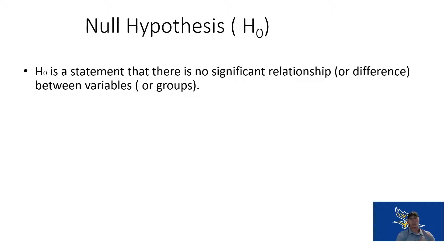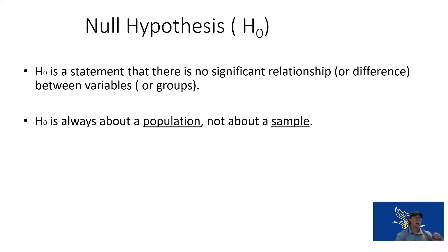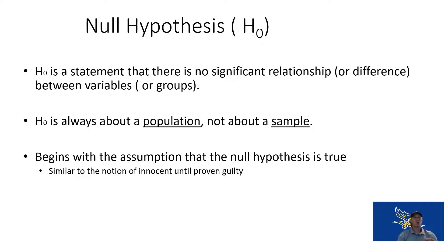Nothing's happening — that's the null. The null hypothesis is always about the population, not the sample. So we're saying that in the world, in all people, all of this type of group, there is no significant relationship or difference on the variables or groups. This is our assumption that our null hypothesis is true — kind of like saying innocent until proven guilty.